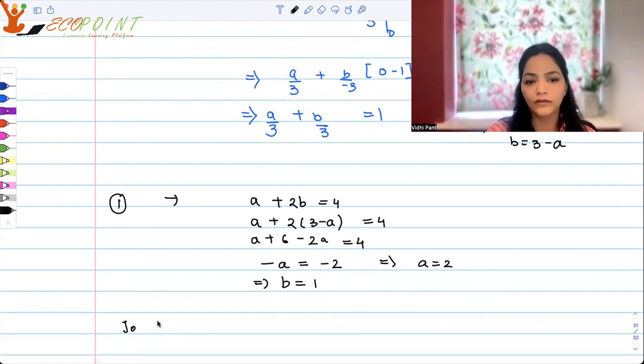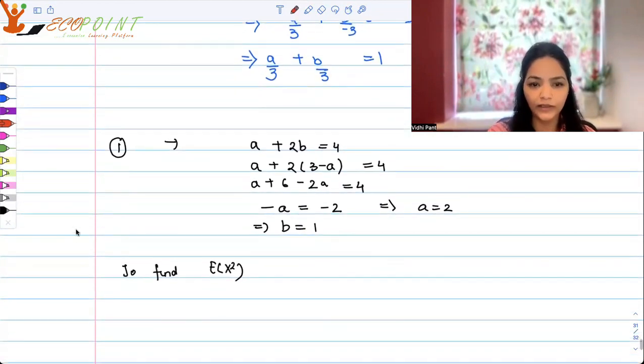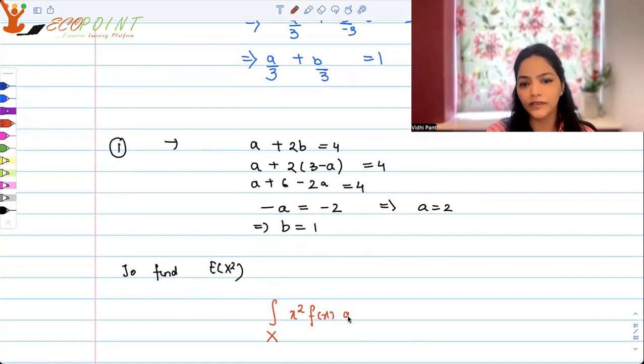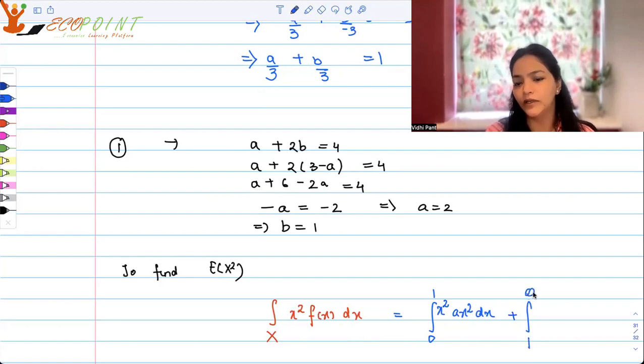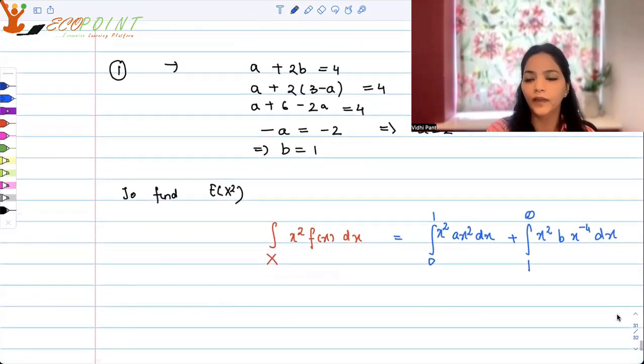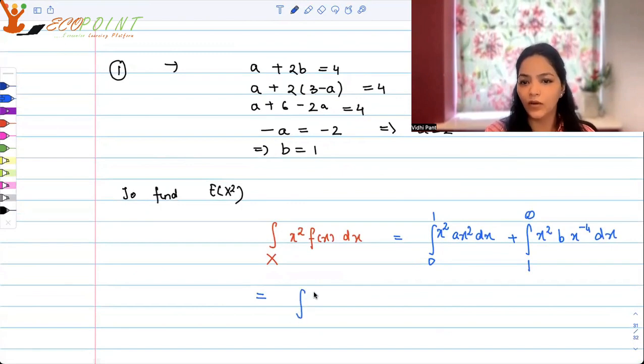What we need to find is E(x square). So how do I do that? E(x square) is the integral in the entire domain of x square f(x) dx. So that will be equal to from 0 to 1, x square, let me write down a x square first so there is no confusion. From 1 to infinity, it will be x square b x to the power minus 4 dx. Now we know what a is, a is 2. I can take 2 outside. This is x to the power 4 dx. Plus we know what is b, b is just 1.